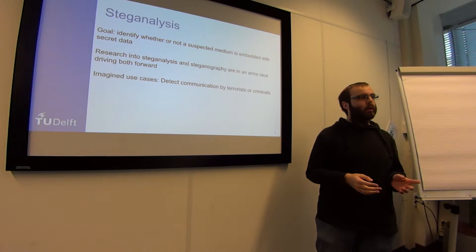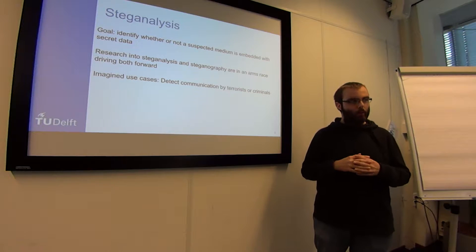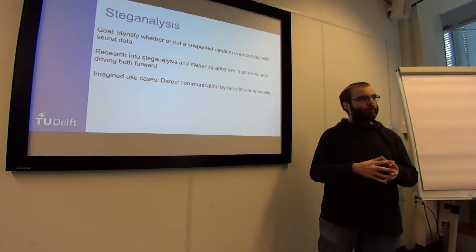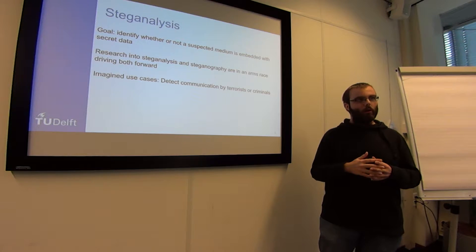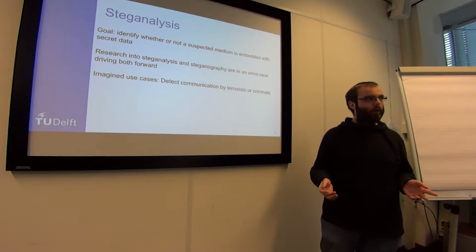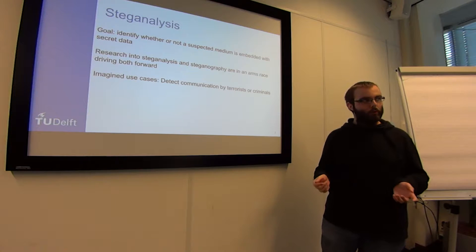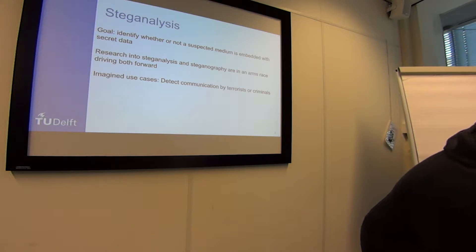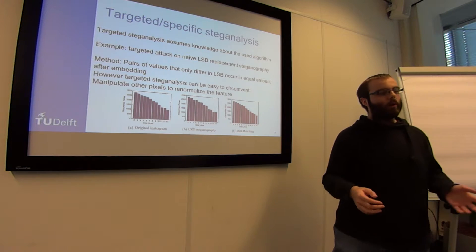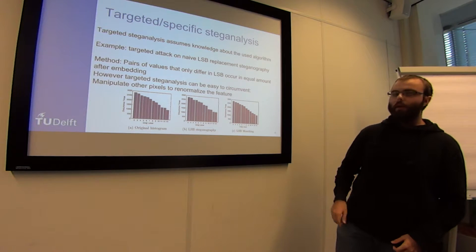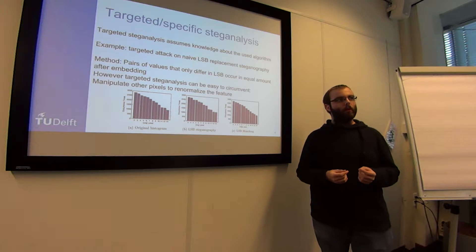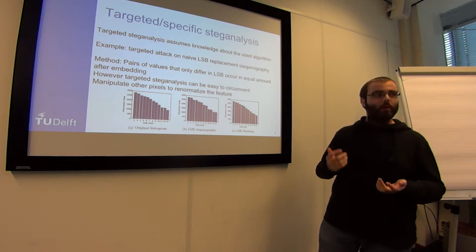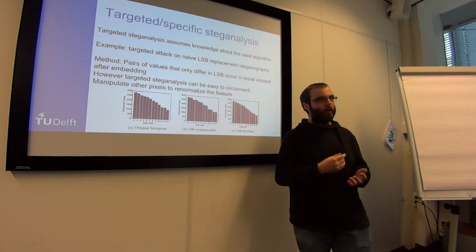Steganalysis is done in two primary ways: either targeting a specific steganography method, or doing it in the universal case. We'll talk about the universal case, but first let's see what the targeted case involves. In the targeted case, we expect to know what algorithm the steganographer is using, and if we know that, we can exploit that specific method.